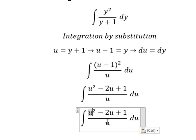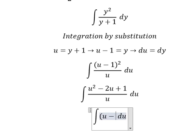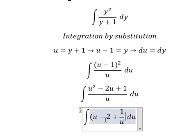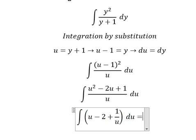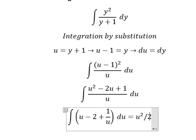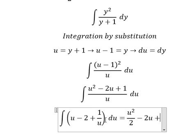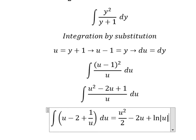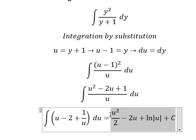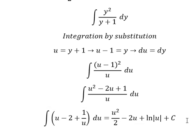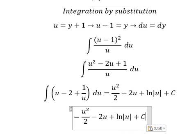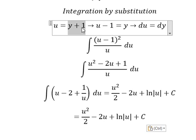So we divide by u. We have u minus number two plus one over u, and now we have the final answer. About u, that is about y plus one.